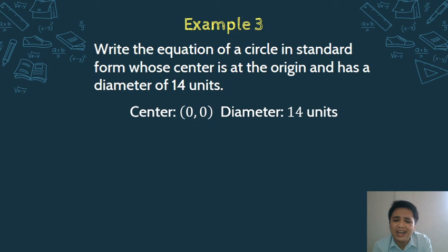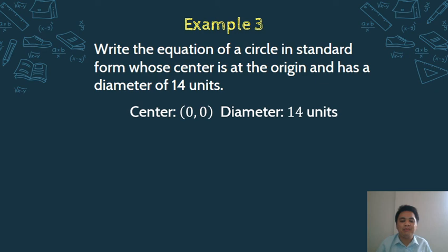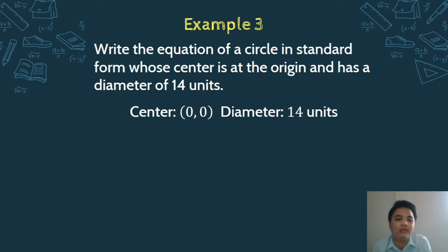Since the diameter is twice the radius, we need to halve the diameter to get the radius. Half of 14 is 7, so the radius is 7 units. Now we have both center (0, 0) and radius 7. Which form do we use? The standard form.